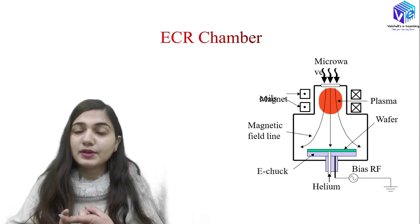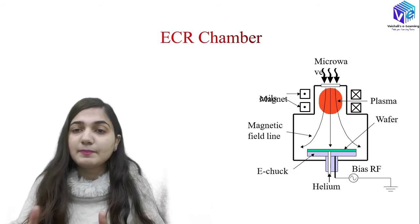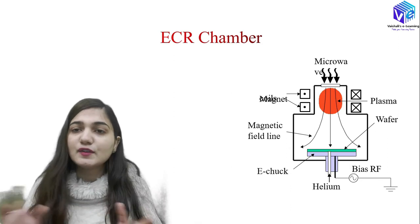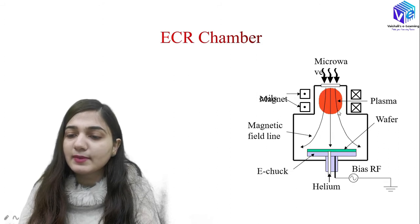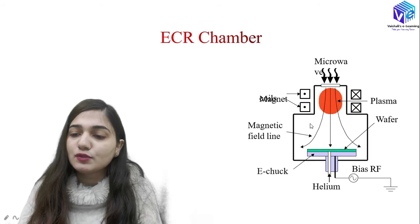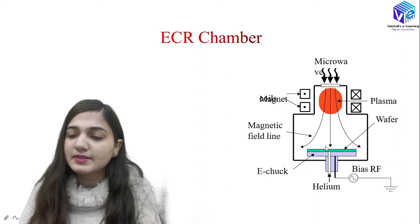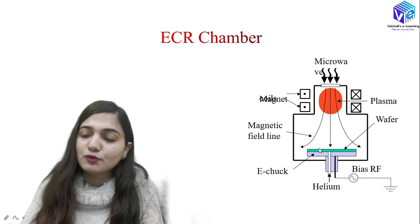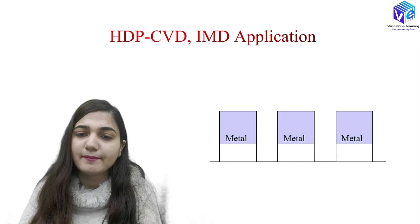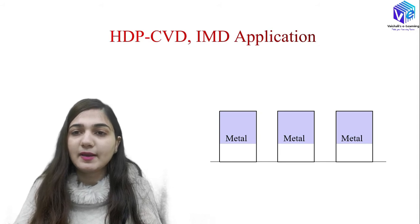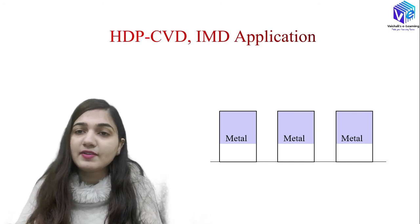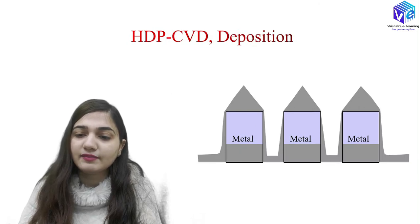We had talked about two types of chambers in high density plasma: first is ICP and second is ECR. ECR is the most commonly used chamber, where we use microwave and magnets. We have the magnetic field lines, the electrostatic chuck, helium sent from the back side, and bias RF. The wafer is placed here and we perform HDP-CVD in the same chamber. The application is gap filling using simultaneous deposition and etching — it has IMD applications.